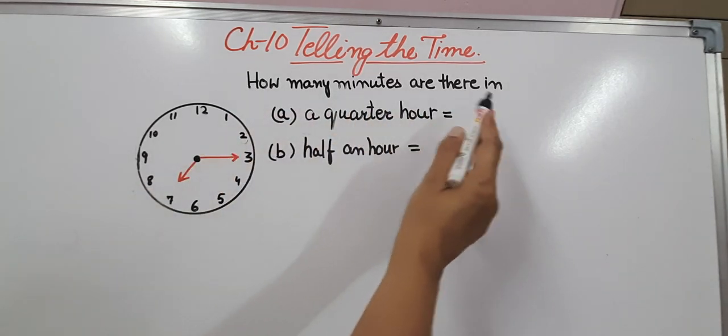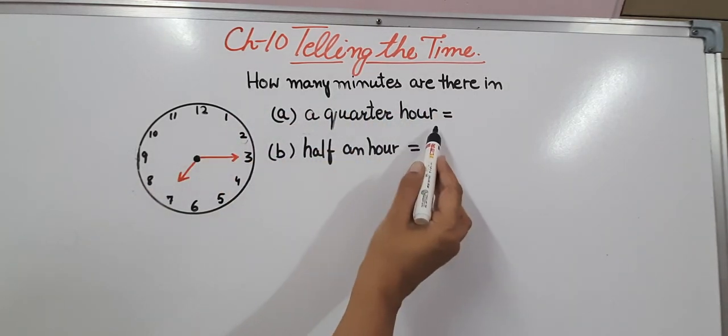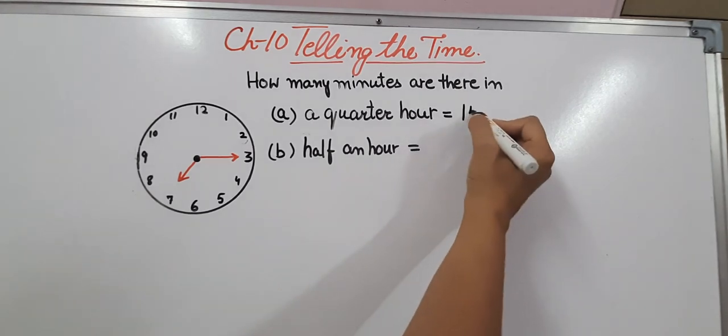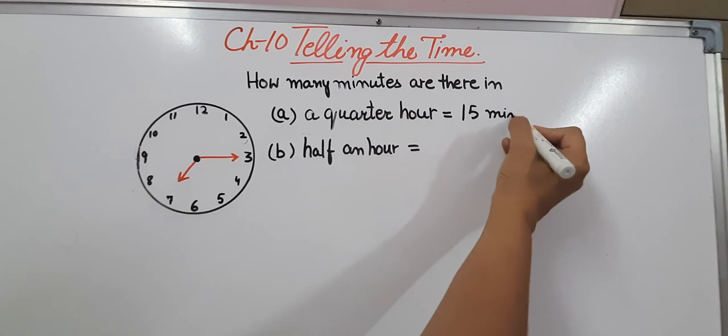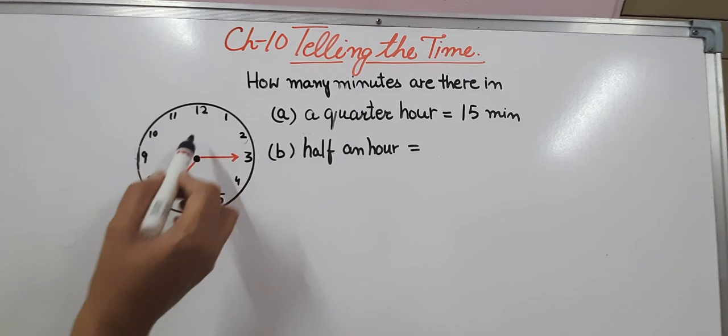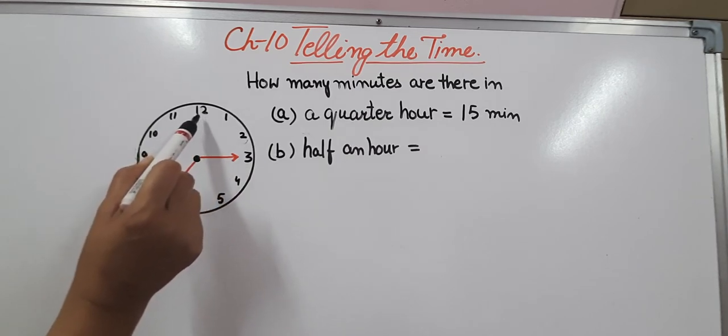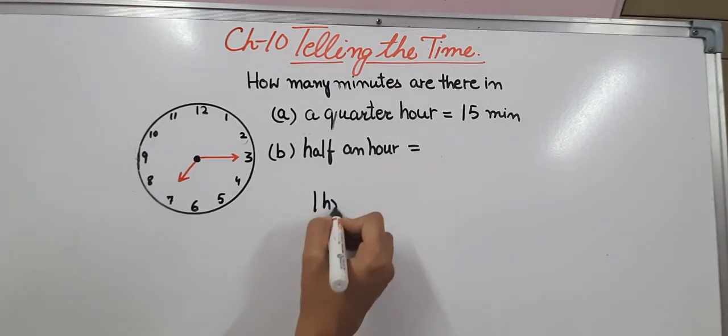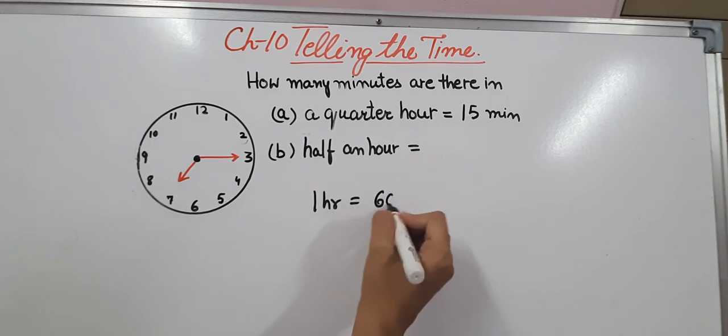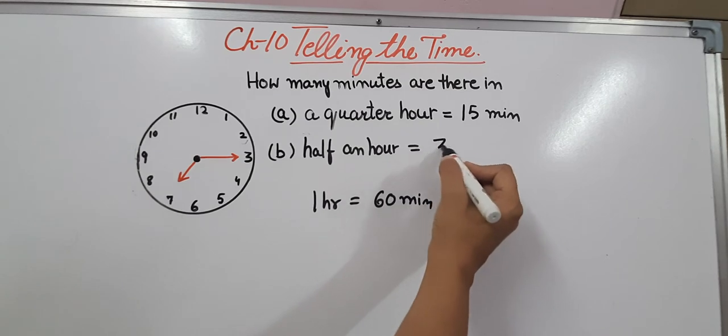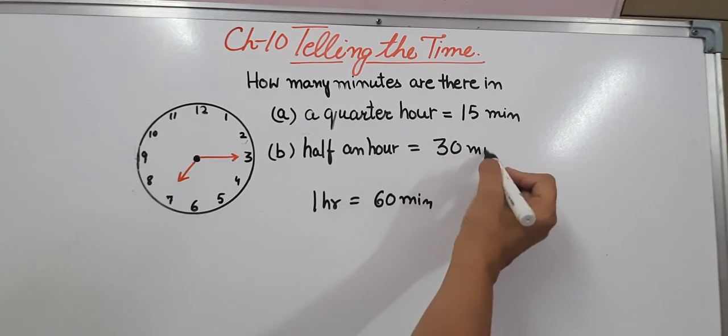How many minutes are there in a quarter of an hour? That is 15 minutes. Now how many minutes are there in half an hour? We know that when the minute hand moves from 12 to 6, it is 30 minutes. Or you can calculate it as 1 hour equals 60 minutes, so half an hour will be 30 minutes, that is half of 60 minutes.